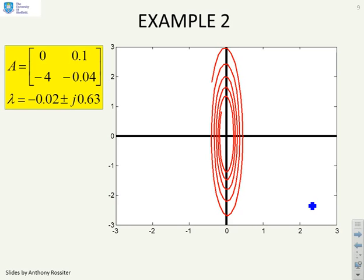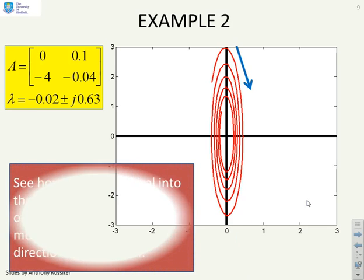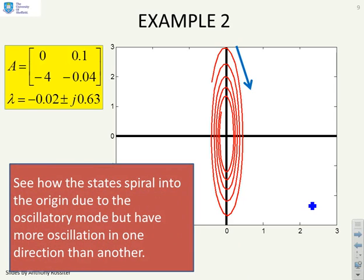Here's a different example. In this one, because I've got a very slow decay, you can see almost that there's an implied major and minor axis. You can see the oscillation in the Y direction is much larger than the oscillation in the X direction. But nevertheless, assuming we've got convergence, we still have this spiralling type of behaviour.